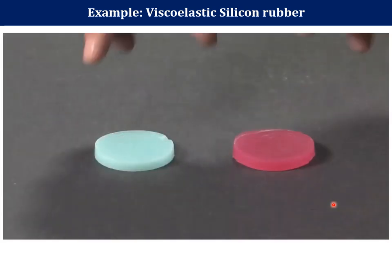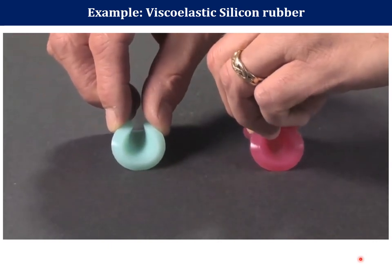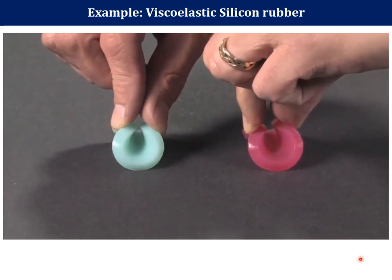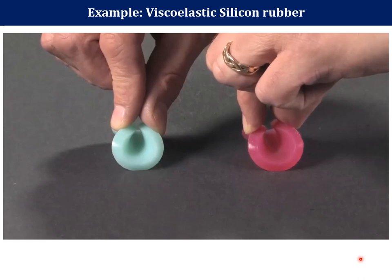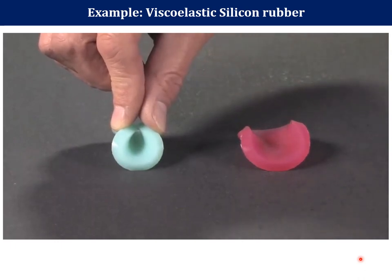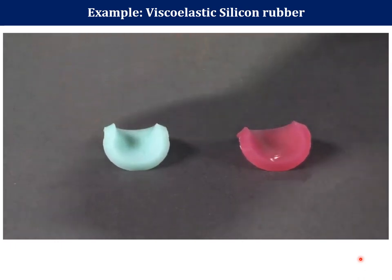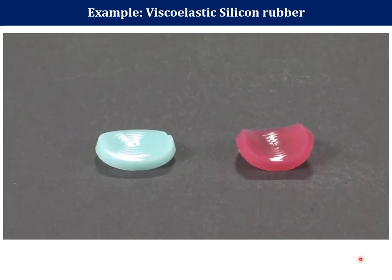The timescale on which a particular viscoelastic silicone rubber shifts from hard to soft depends on its formulation. The red viscoelastic silicone rubber takes a very long time to show its softer side — it's slow to adopt the curled shape and slow to return to its original shape. The mint green viscoelastic silicone rubber, on the other hand, has a much faster response — it adopts the curled shape quickly and returns to its original shape also quickly.